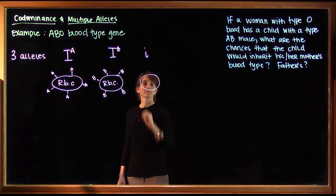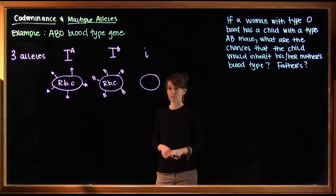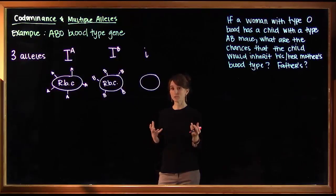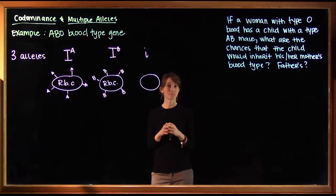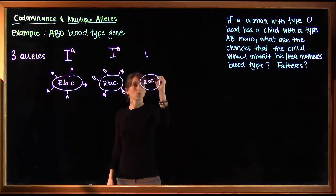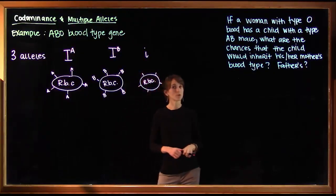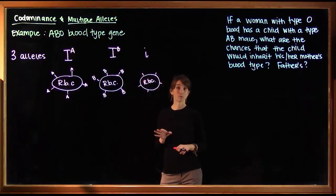The i allele has a mutation. And that mutation is a deletion, which caused a frameshift, which means that the protein, the enzyme, doesn't fold properly and it has no enzymatic activity. So these red blood cells will still have the carbohydrate tags on them, but there's no enzyme to modify them. So we're going to leave those blank.